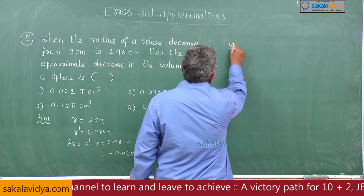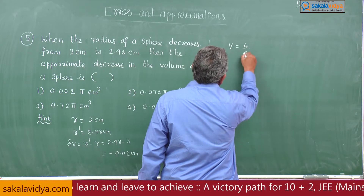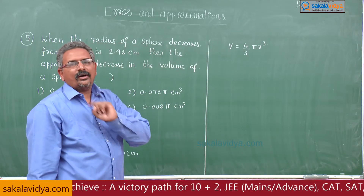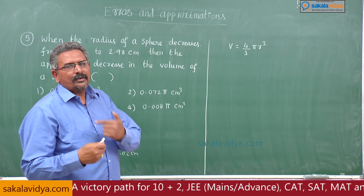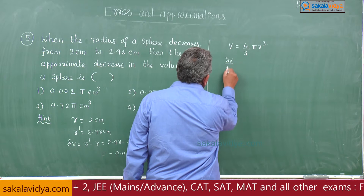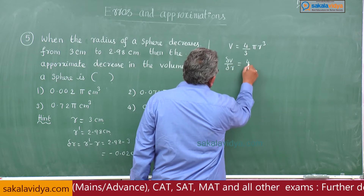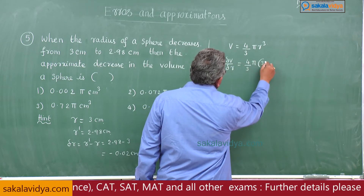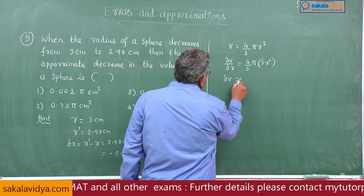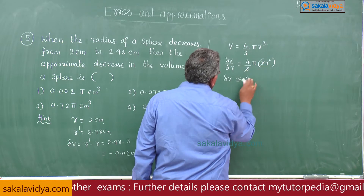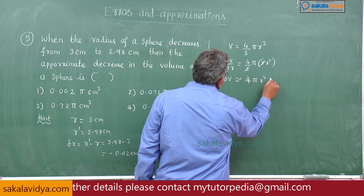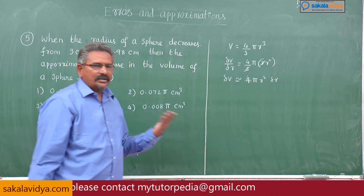Volume of a sphere: v is equal to 4 by 3 pi r cube. Now differentiate with respect to r and write in terms of delta v. Delta v by delta r is equal to 4 by 3 pi into 3r square, so delta v approximately equals 4 pi r square into delta r.